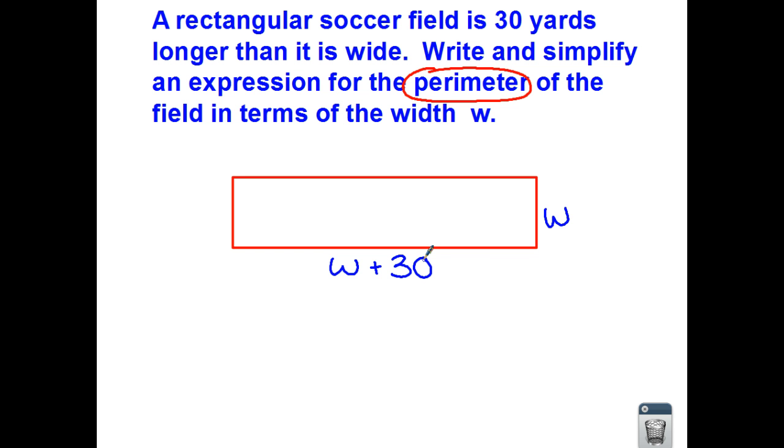Now we would like to write and simplify an expression. So the expression would be the sum of all of your sides. So if I were to write out all of the sides, I would have an additional w and another w plus 30. So let's add up all of those sides. So we would have a w plus a w. Those are your widths.